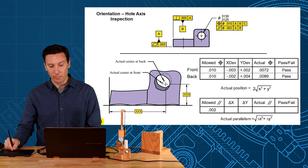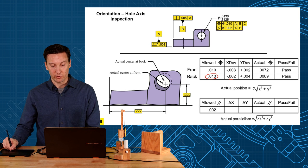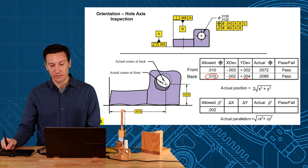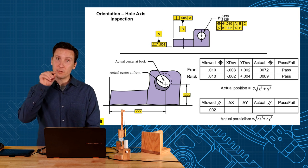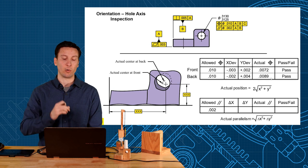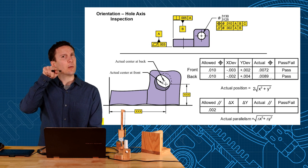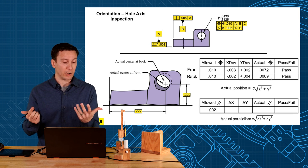Do the same thing with the back of the hole. Allowed tolerance zone of 10. You measure the deviation in x and y to get your actual. So that hole is in position in both the front and back of the hole. Now is it within the parallelism though? Is it not tilted too much?